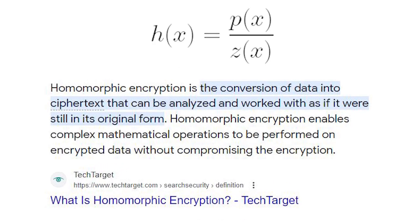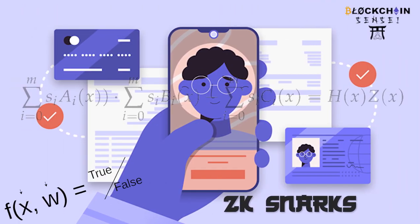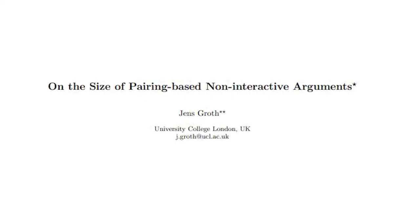That is a very simplified view of how ZK-SNARKs work. Now there are several types of ZK proof constructions. The one we are providing a simplified explanation of is called Groth16.